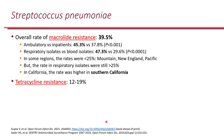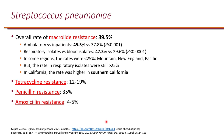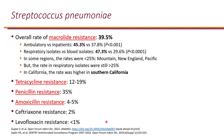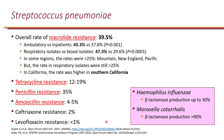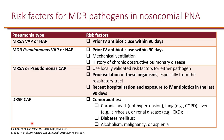Tetracycline resistance is also high at 12% to 19% of isolates. Penicillin resistance is high at 35%, and amoxicillin resistance is 4% to 5%. Ceftriaxone resistance is relatively low, and levofloxacin resistance is very low. For the other organisms, Haemophilus influenzae and Moraxella catarrhalis produce beta-lactamases. In fact, more than 90% of Moraxella produce beta-lactamases, and up to 30% of H. influenzae produce beta-lactamases.